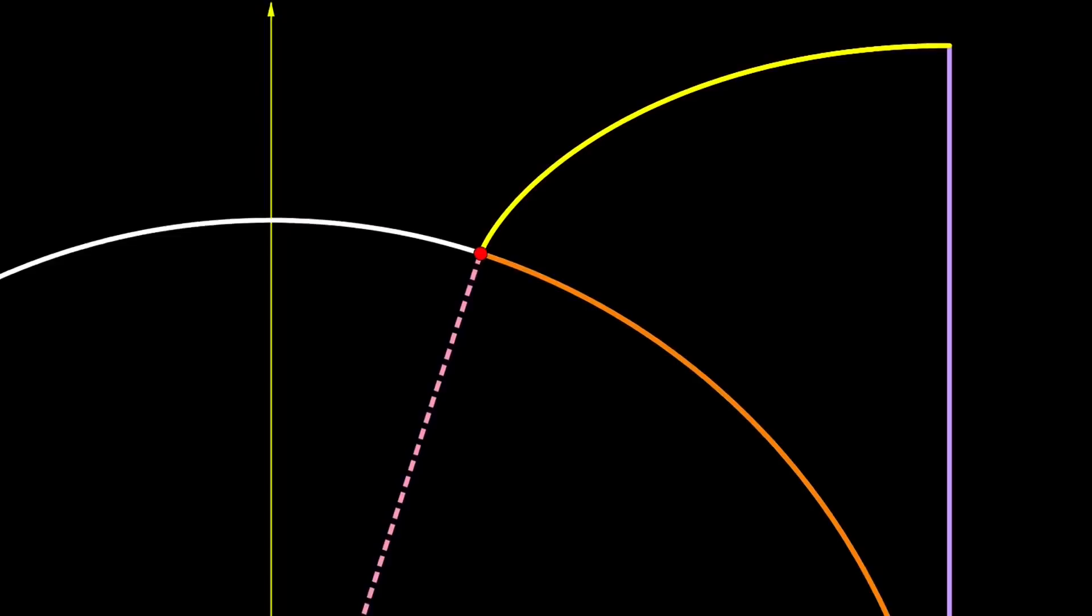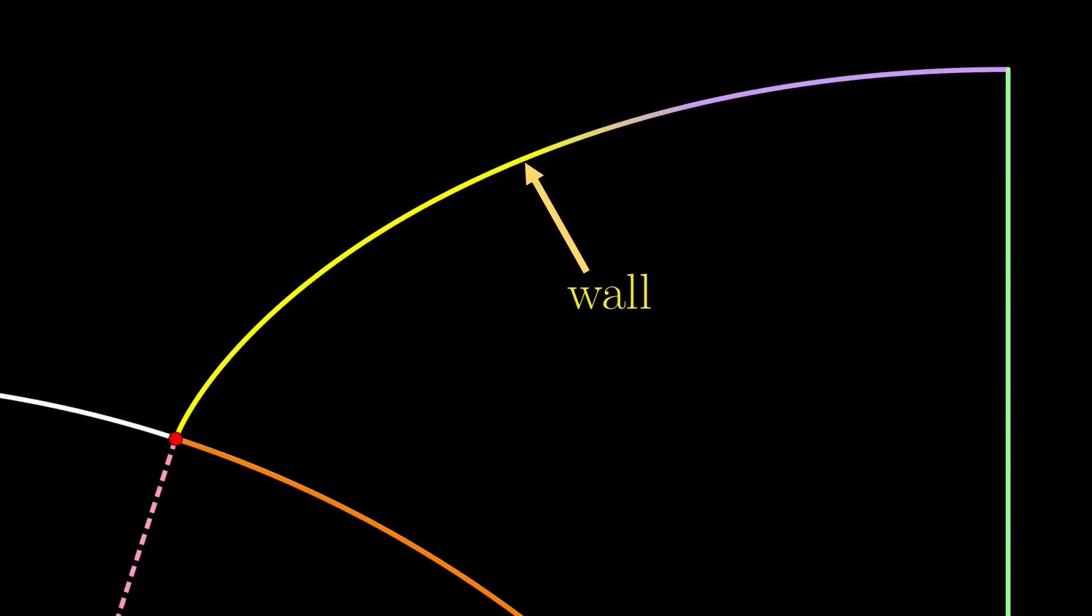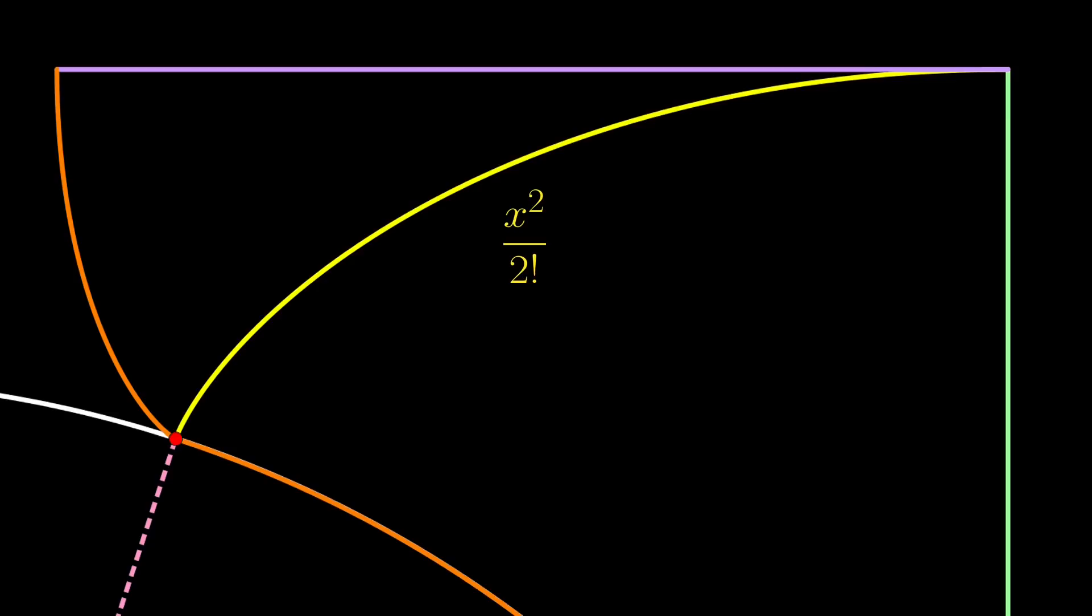Now we zoom into the involute we just created. This time, however, we treat the newly created involute as another wall and wrap another taut string against it. And again, we unwrap this string, tracking where the tip is going. As said before, the length of this wall is x squared over 2 factorial, so the horizontal segment has the same length of x squared over 2 factorial. But what about the involute that we created? This has length x cubed over 3 factorial. Again, the reason will be explained later.